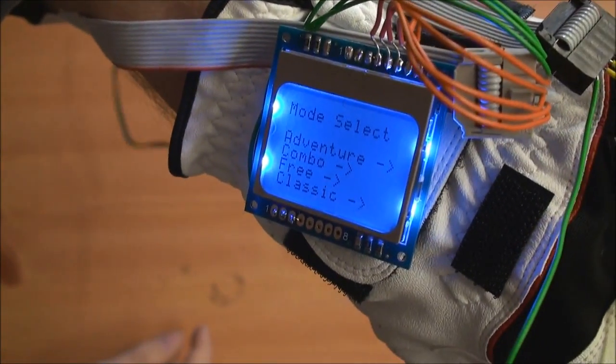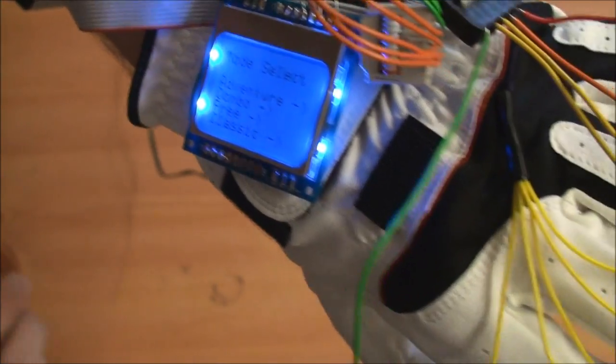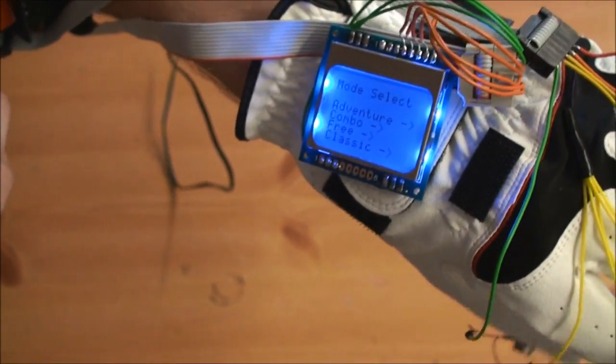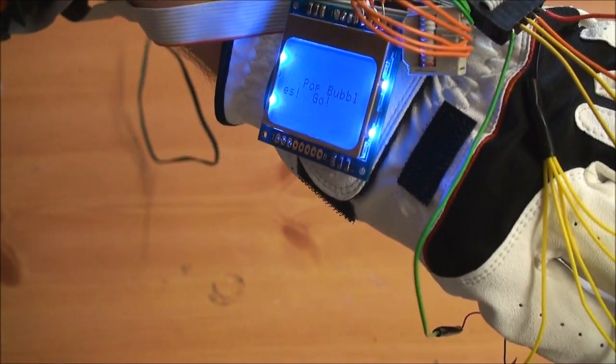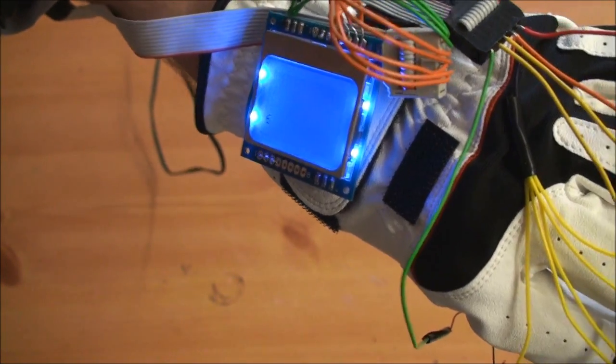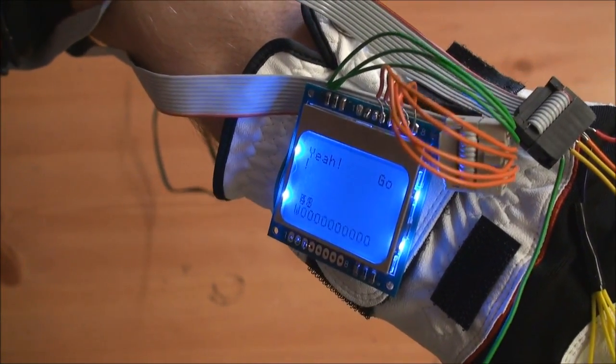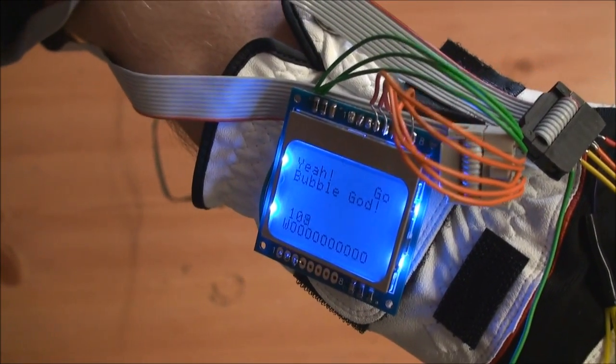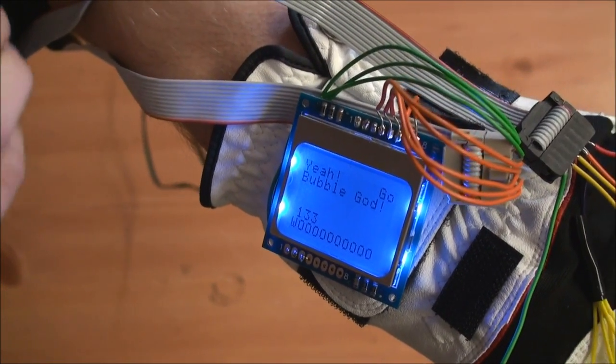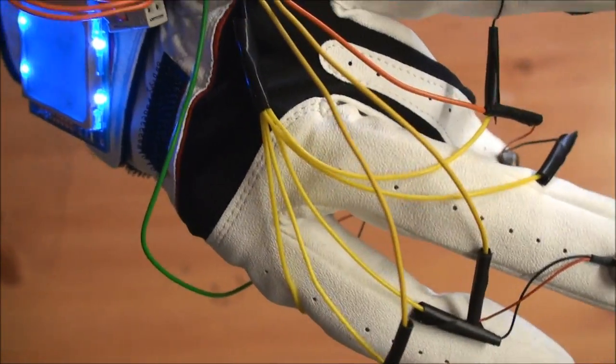Currently, the other two modes are not working and are in progress. So what we can do is we can select one of them. We're going into free mode right now. And what that does is, as you pop bubbles, it's going to count up the number of bubbles and give you fun little feedback, as you can see there, like bubble pop god. And that works with each finger.